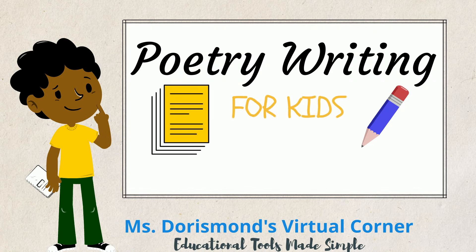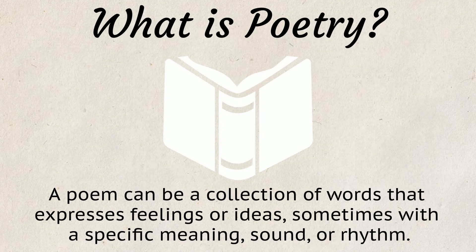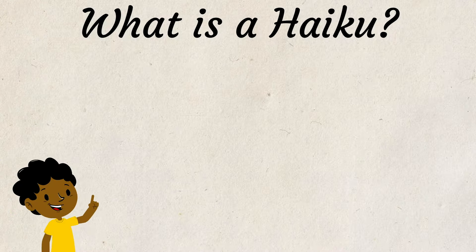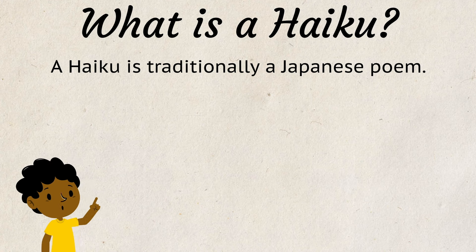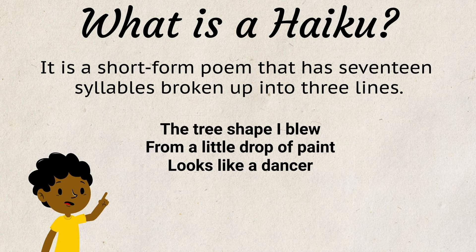Poetry Writing for Kids. Topic 1: Writing a Haiku. A poem can be a collection of words that expresses feelings or ideas, sometimes with a specific meaning, sound, or rhythm. A haiku is traditionally a Japanese poem. It is a short-form poem that has 17 syllables broken up into three lines.